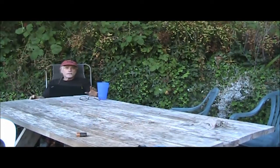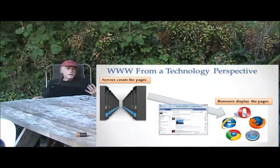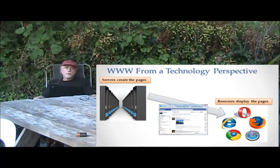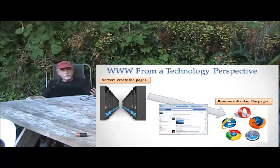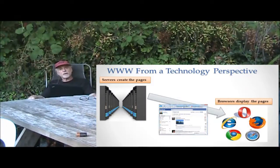The World Wide Web consists of some computers that are sending information and some computers that are consuming information. The ones that are sending information are called servers. The ones that are consuming information are called browsers. The servers are programs that run on computers to serve information through the Internet to other computers — a server serves information. And then on the other side, on your computer, are browsers. Browsers consume information. They also send requests to the server to say, "give me this information" or "I want to talk to a different computer." And all of that is what the World Wide Web consists of: servers producing information and browsers consuming information.